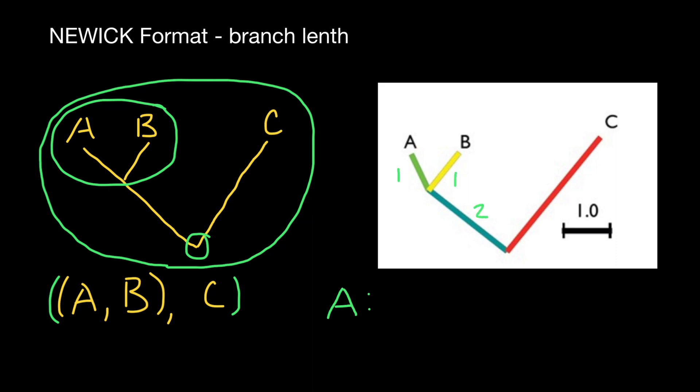1 here, 2 here, and 3 here. So we add 1, which specifies the length of this branch. Then we separate species A and B with comma. B stands for the species B, colon, and 1. And we include them in parenthesis.